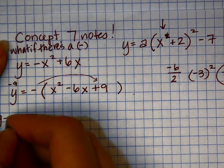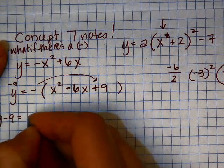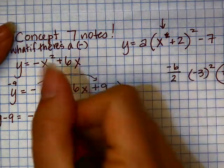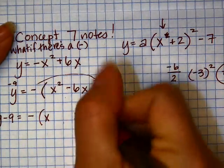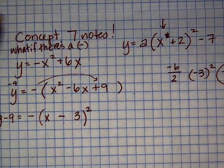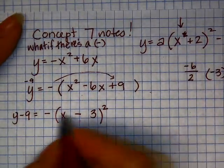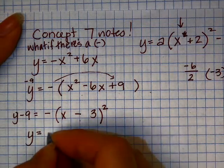So we have y minus 9 equals... Now, yesterday, we factored this over and over again. Same story today. Square root. Square root. Whatever that sign is there. Oops. I'll move that slightly over. There you go.